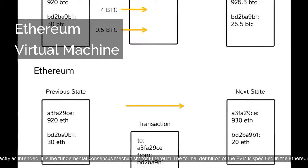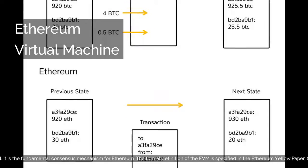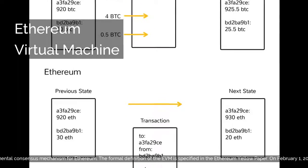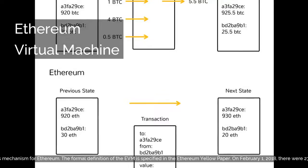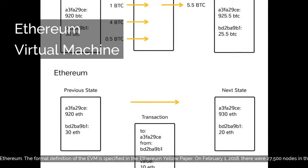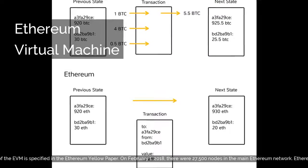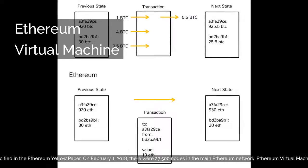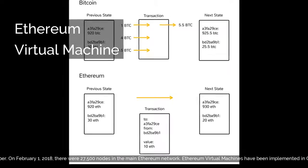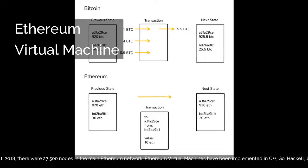The formal definition of the EVM is specified in the Ethereum Yellow Paper. On February 1, 2018, there were 27,500 nodes in the main Ethereum network.